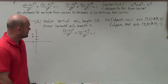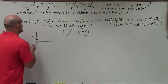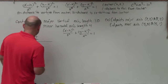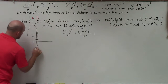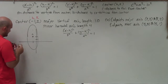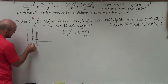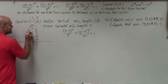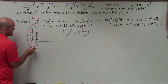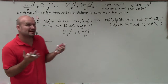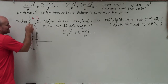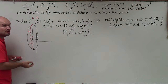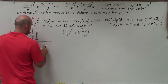We know h and k — that's negative 1 and 2. Now I need to figure out what a is. It has a vertical major axis. The distance from the vertice to the center is a, and we can go in the positive direction as well as the negative direction. The length of the whole major axis from vertice to vertice is 2a, not a. So we can say 2a is equal to 10.